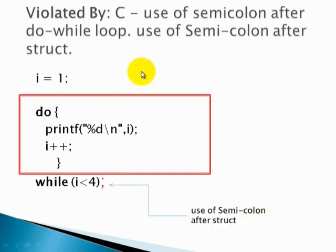This example also shows how regulatory principle is violated by C programming language. In C programming, use of semicolon after do-while loop and use semicolon after struct.